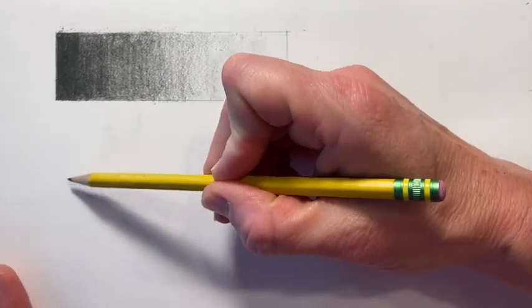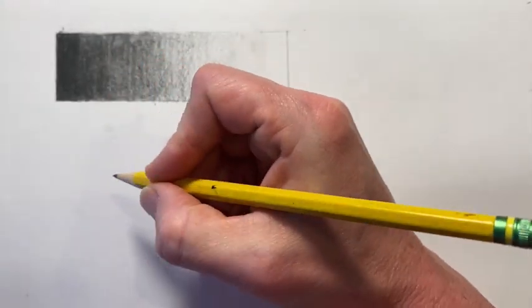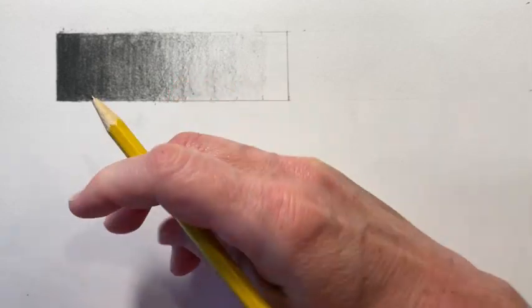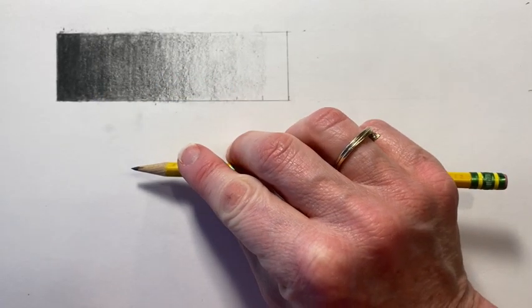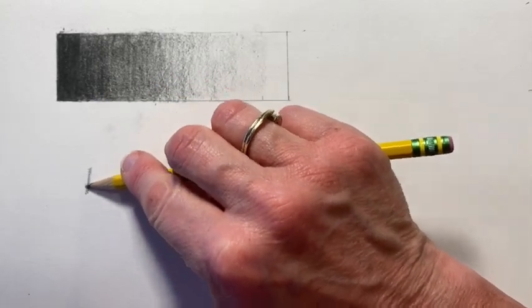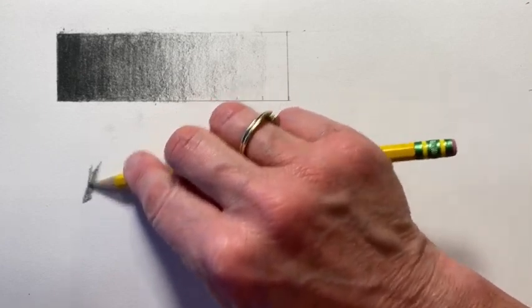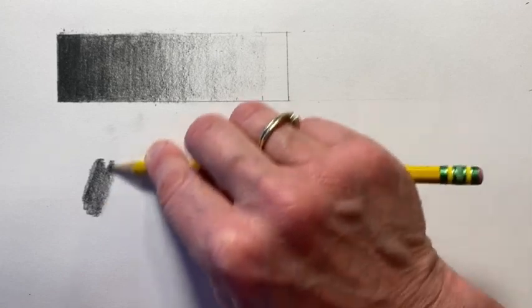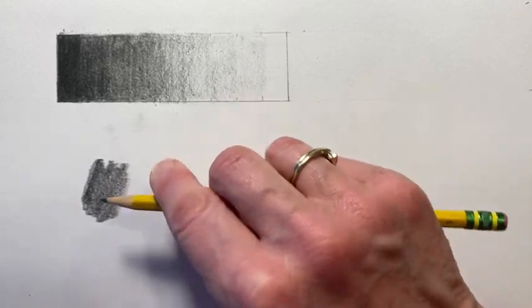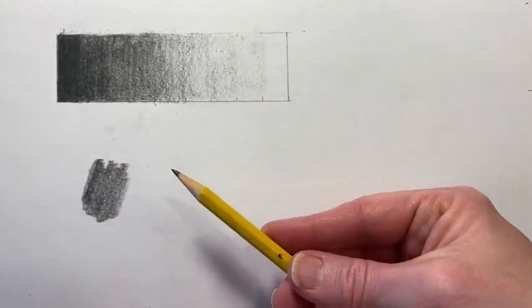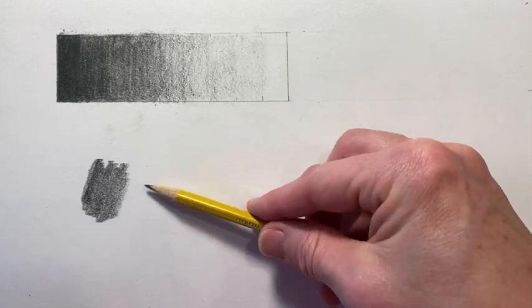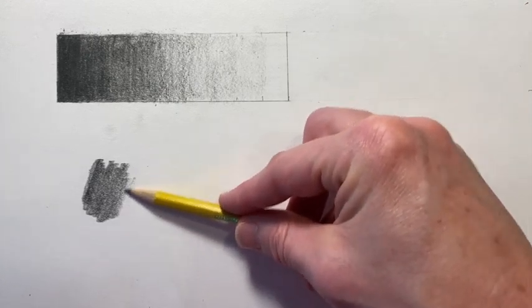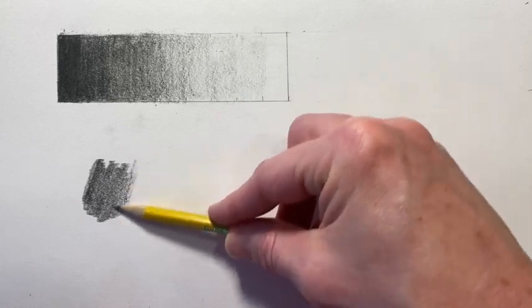Make sure that when you are shading, you don't hold your pencil like you're writing a letter or you're doing other work. You really want to hold your pencil on the side. So as you could see here, it's a totally different grip when you are applying the shading technique. So just look at how you're gripping your pencil and really try to change that grip.